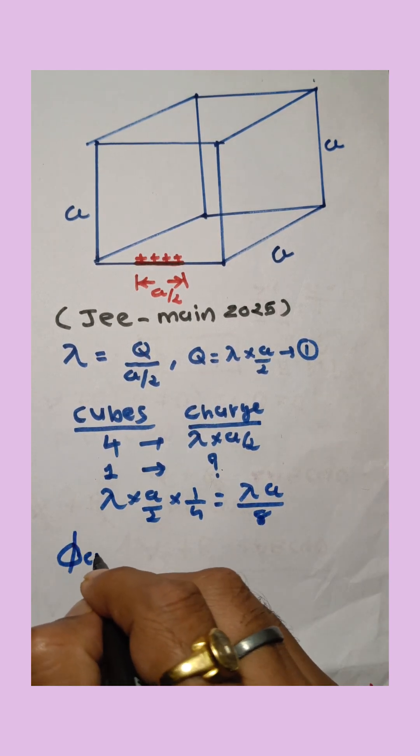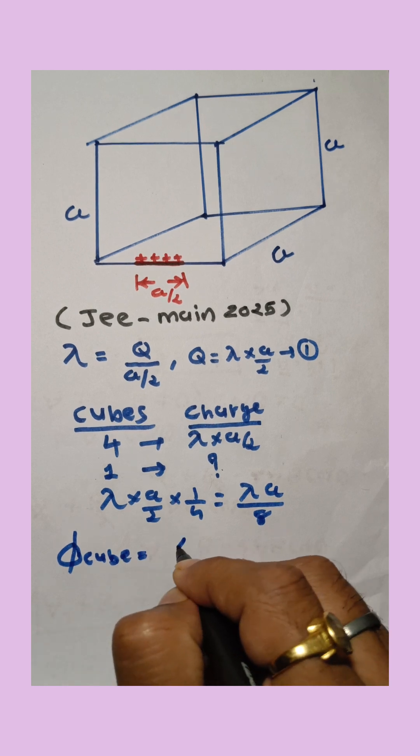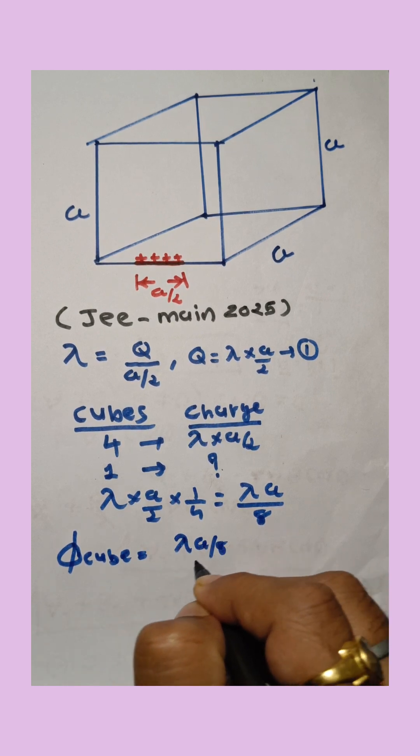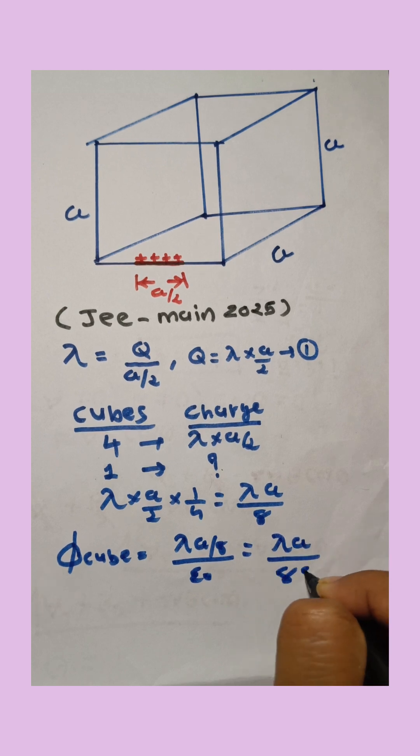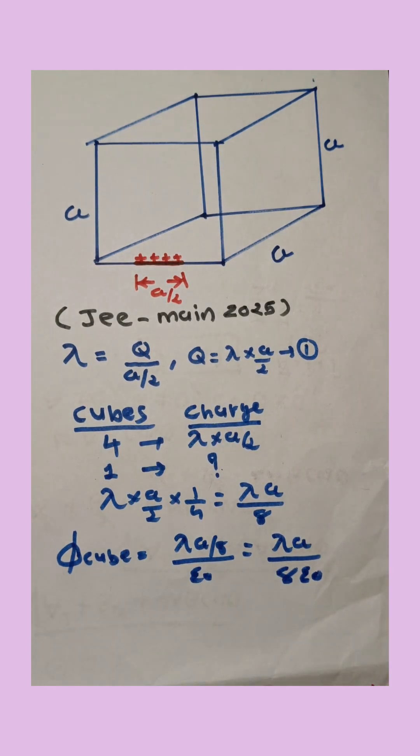flux linked with the given cube equals the enclosed charge divided by epsilon naught. So the answer is lambda a upon 8 epsilon naught. That is the electric flux linked with the cube.